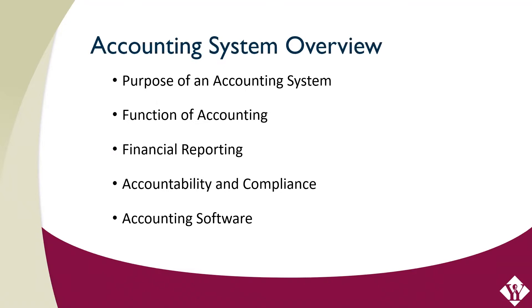We recommend that all libraries use a computerized accounting system rather than a manual system. Some accounting software is inexpensive and simple to use, such as QuickBooks, and other packages are more robust, costly, and also capable. QuickBooks is an accounting system that we see a lot, but we don't recommend that public libraries use it except for the very smallest of libraries. The reason for that is QuickBooks does not require the use of account numbers, and the state of Michigan does require uniform account numbers to be used. Also, historical transactions can be changed with no paper trail, which we as auditors would never recommend. And it is cumbersome to use for multiple funds as well. So we recommend using accounting software that is designed for multi-fund governmental use — there are several packages out there that are moderately priced and very user friendly.